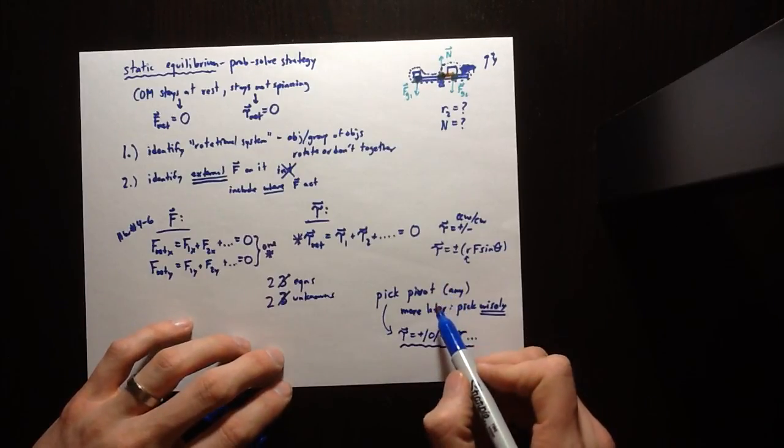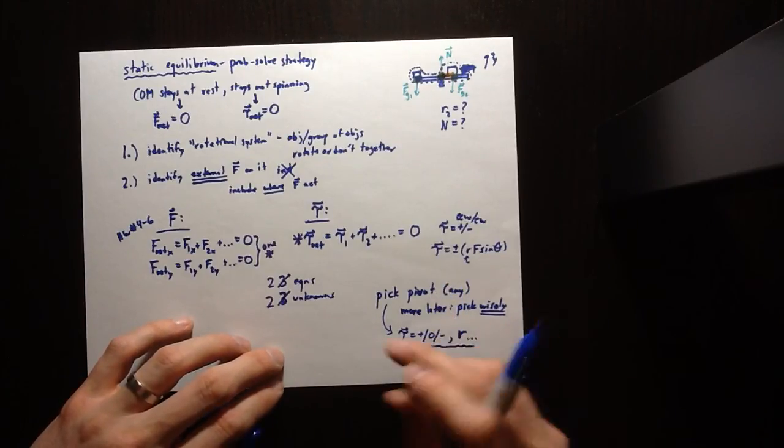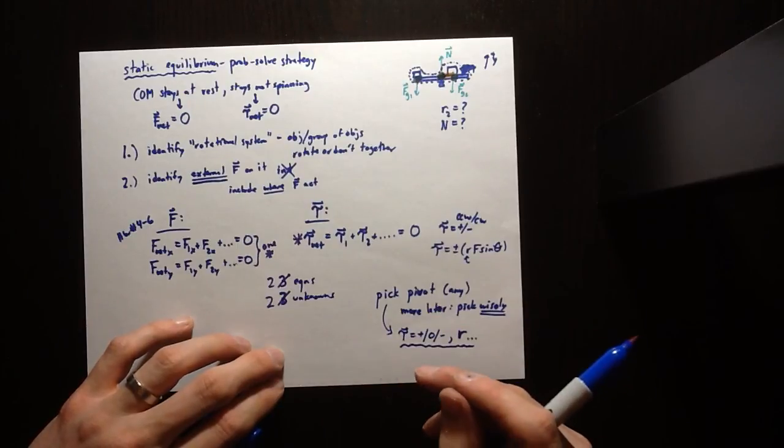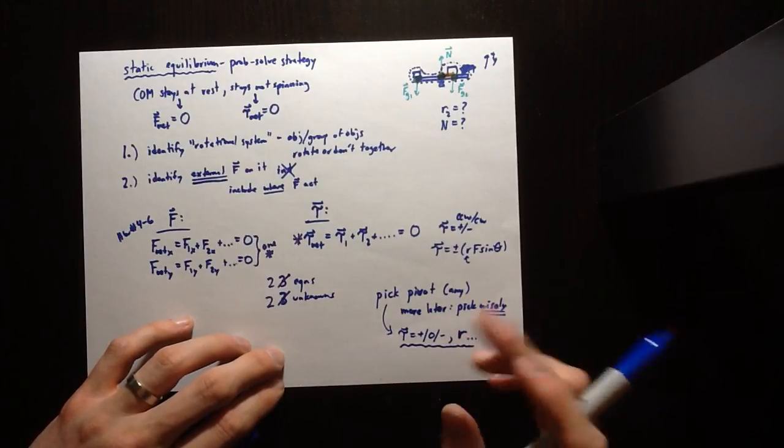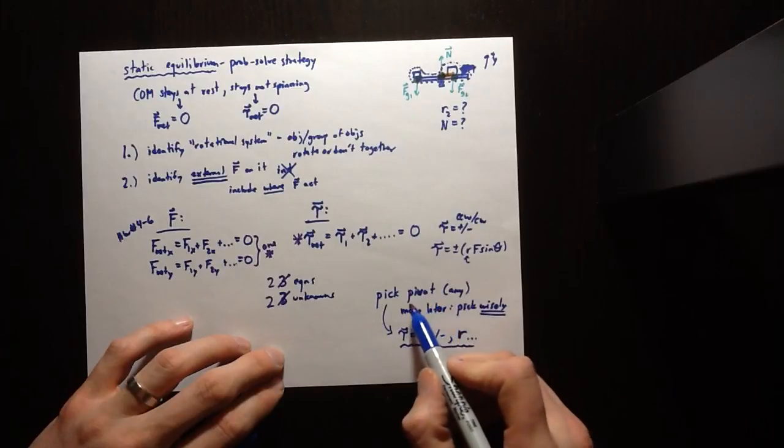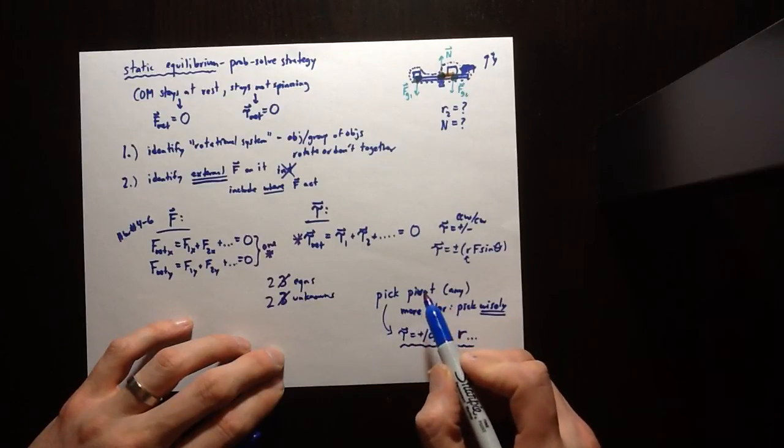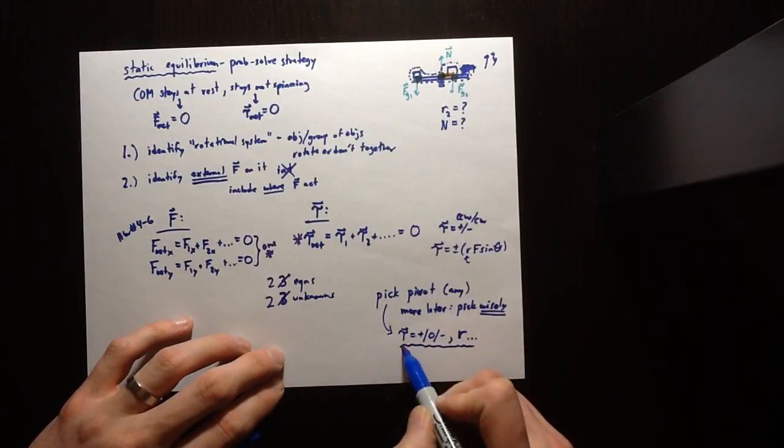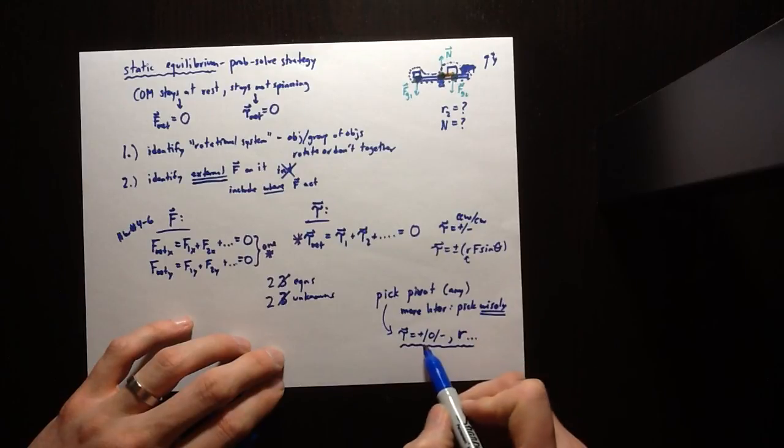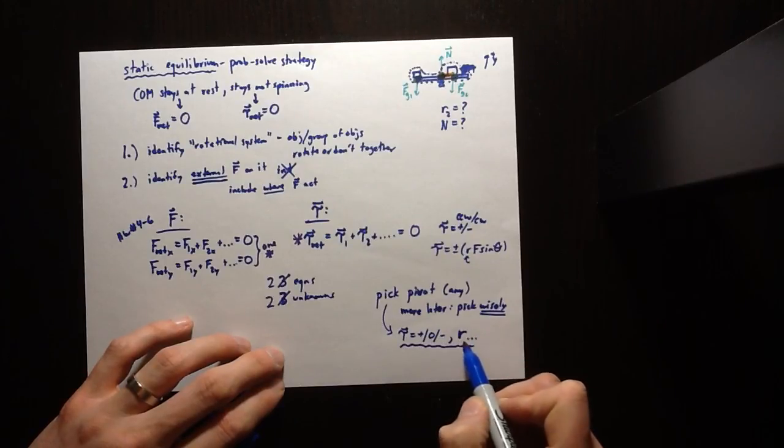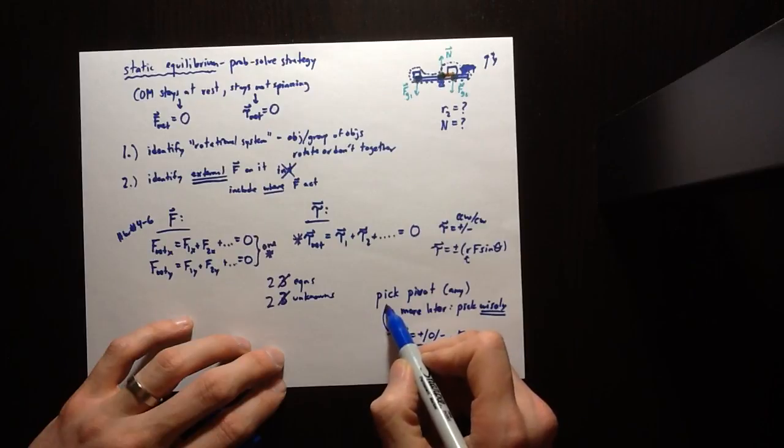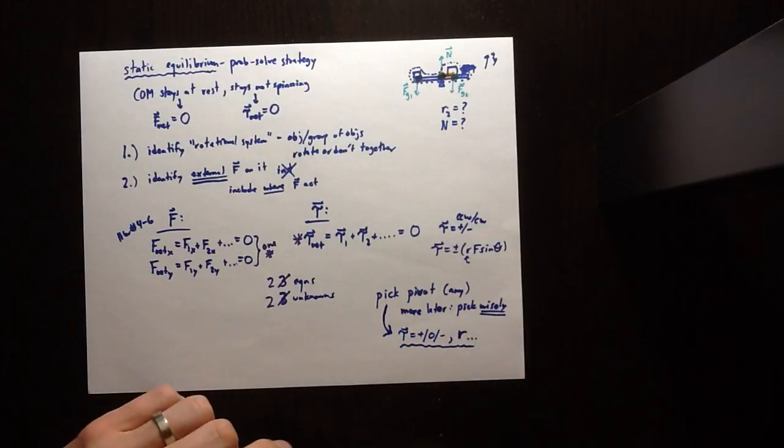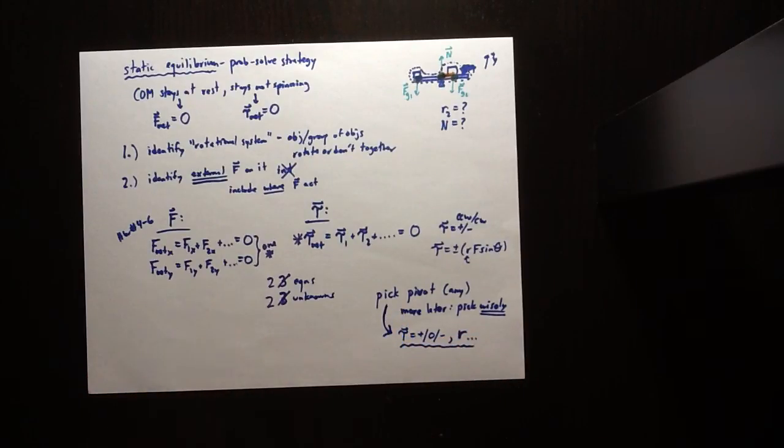So a lot of students I see, they pick a pivot, and then it kind of drifts around in the middle of the problem. So it's like having your origin changing up from underneath you in the problem. So once you pick a pivot, you've got to stick to it. Calculate all your torques relative to that pivot. And whether the torque is plus, zero, or minus, and what the leverage is, can be greatly affected by that pivot choice. So once you pick a pivot, you've got to stick to it.